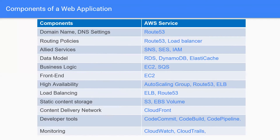A limited amount of routing within a region can also be done by your load balancers. For allied services — for example, sending notifications, sending emails, and providing proper user authorization — you have multiple services. You have SNS for notifications, you have SES (Simple Email Service) for working with emails, and you have Identity and Access Management (IAM) for user authorization and user authentication.